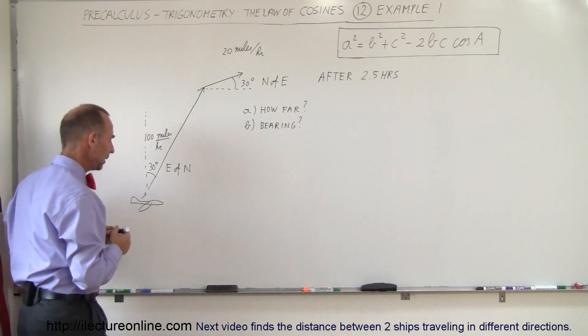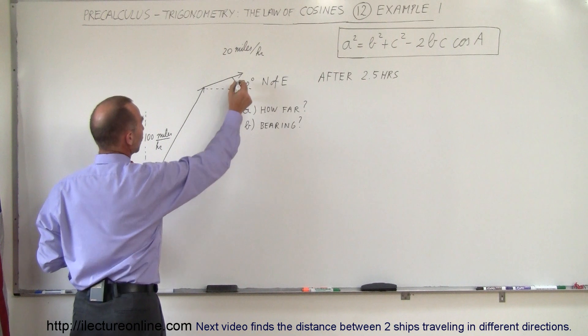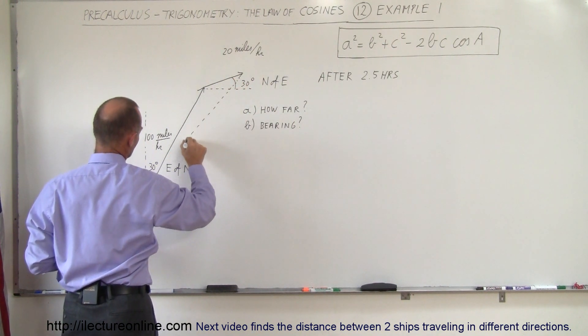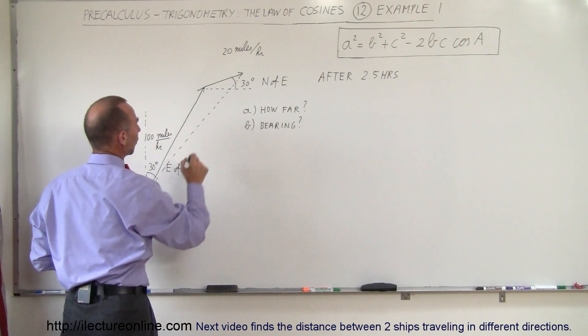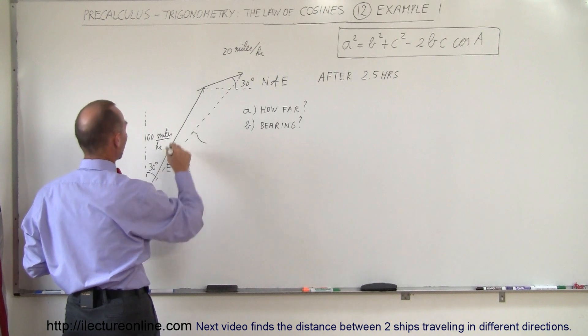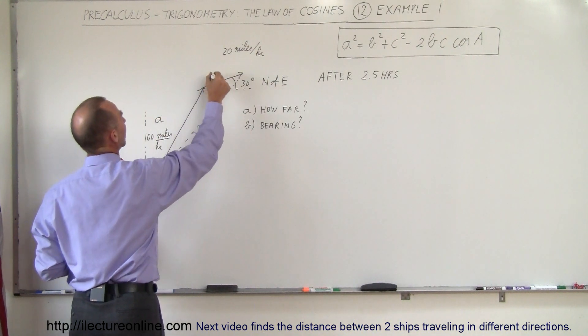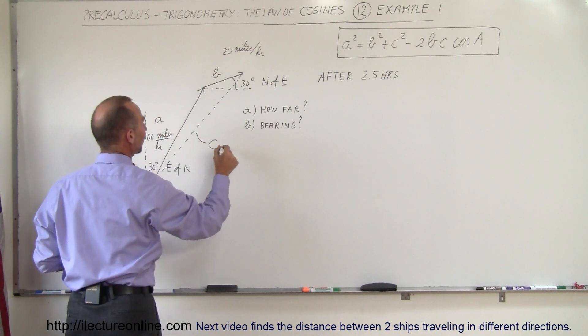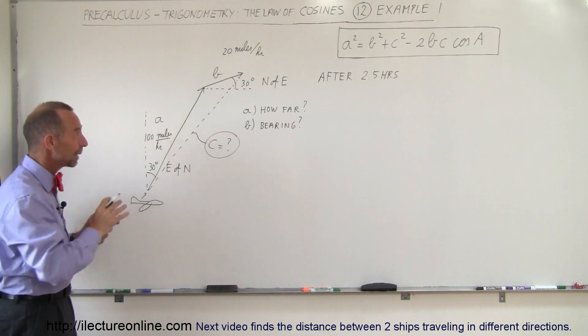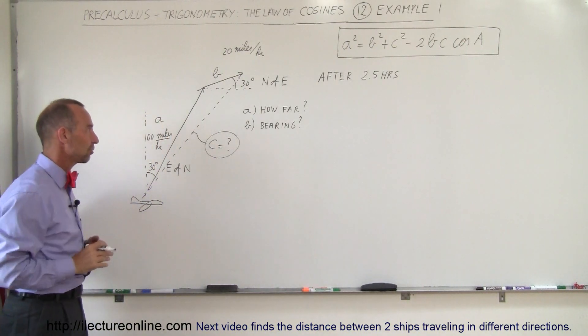So what we end up with is we connect this triangle. Here's the starting point, here's the ending point, and connect the dots like that. What we want to know is how far. If we call this side A and call this side B and then we call this side C, we're trying to find out what side C is equal to. It's always a good idea to label the sides A, B, and C.